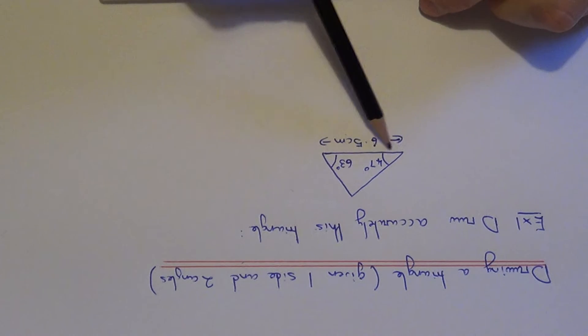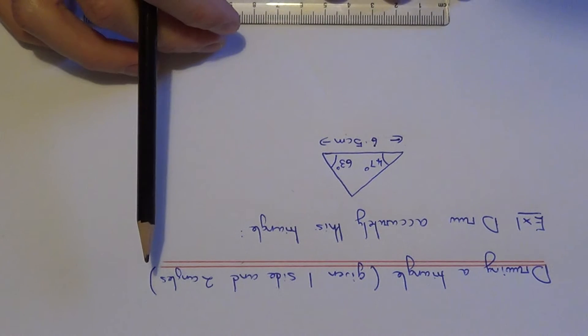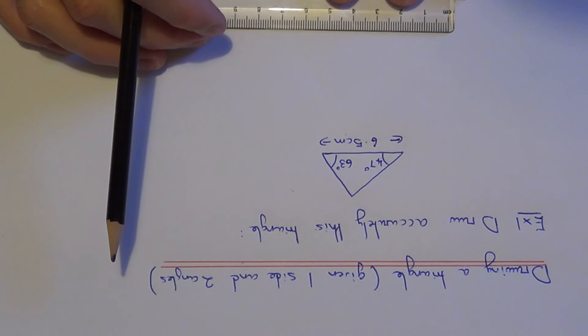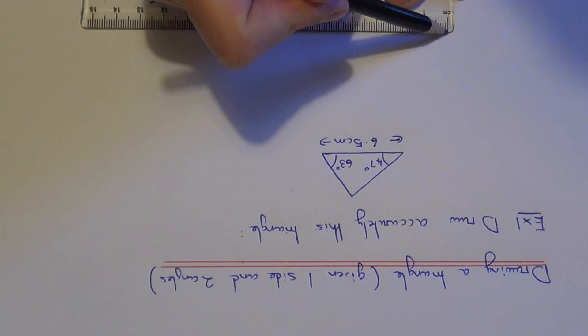First of all, draw the bottom edge of the triangle. In this example, this is 6.5 cm.